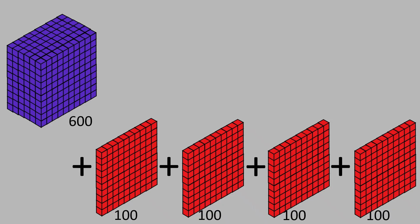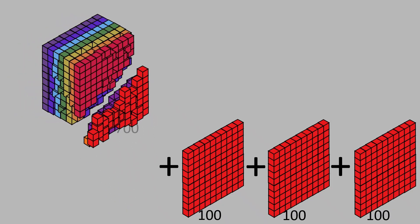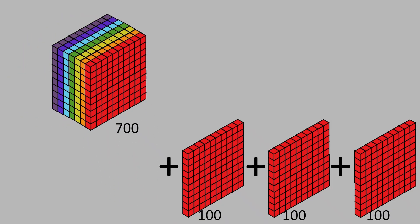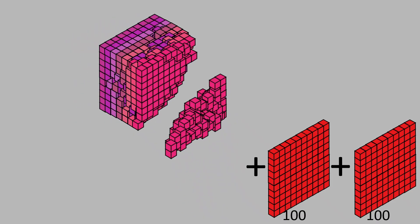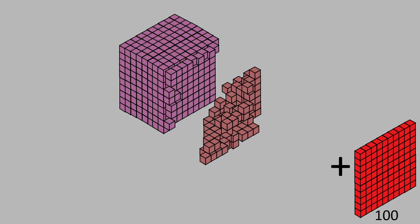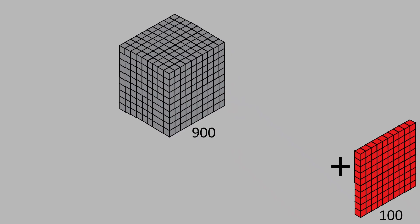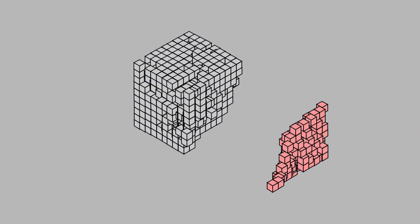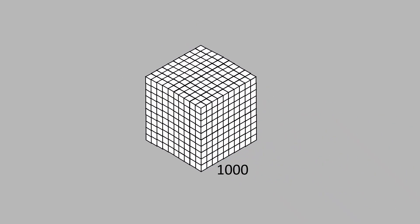600 plus 100 is equal to 700. 700 plus 100 is equal to 800. 800 plus 100 is equal to 900. 900 plus 100 is equal to 1,000.